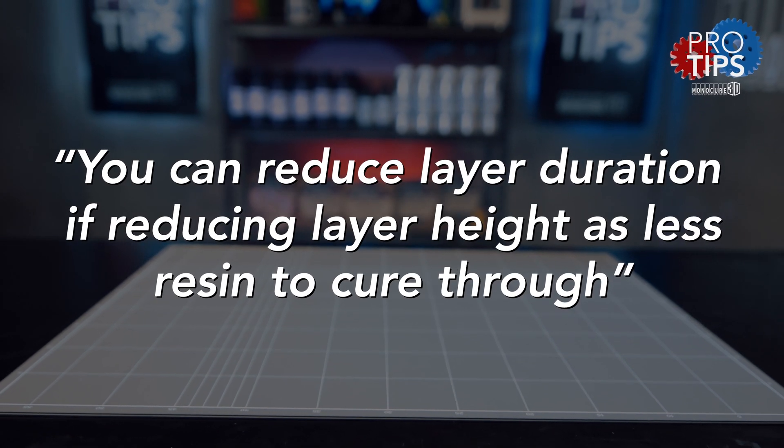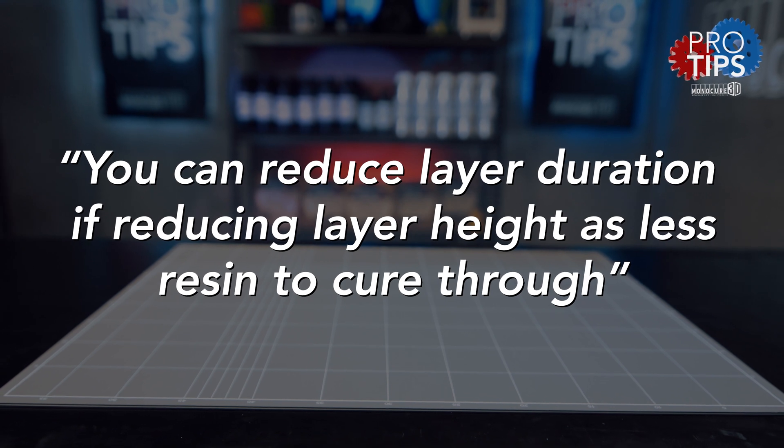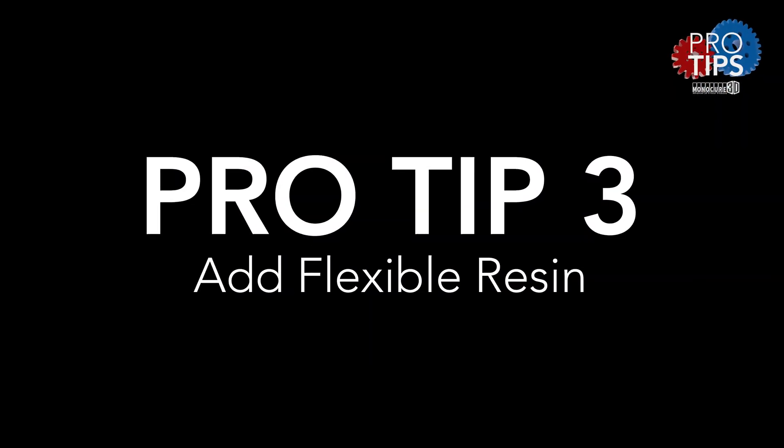You can reduce the layer duration when reducing the layer height, as there is less resin for the light to cure through. And my third tip is adding flexible resin to the hard resin to increase the tensile strength, like our Flex 100.